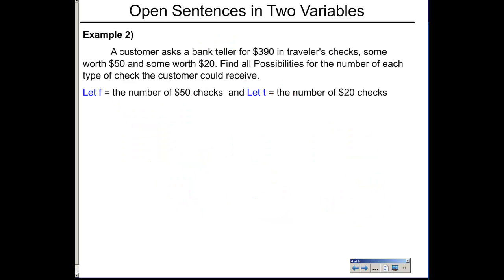Example 2: a customer asked a bank teller for $390 in travelers checks — some worth $50 and some worth $20. We want to find all possible numbers of each type. Let F stand for the number of $50 checks and T for the number of $20 checks. The total is 390, so 390 equals the value of the $50 checks plus the value of the $20 checks.